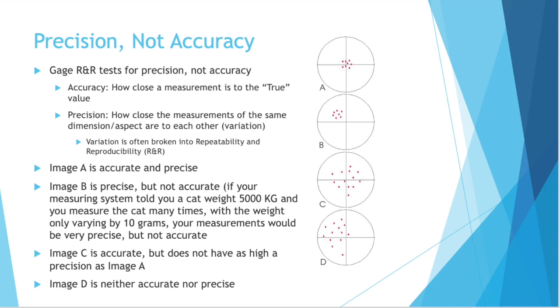Something important to note right away is that gauge R&R tests for precision, not accuracy. So let's go over the difference between those two terms. Accuracy is how close a measurement is to the true value, whereas precision is how close the measurements of the same dimension or aspect are to each other, also called variation.